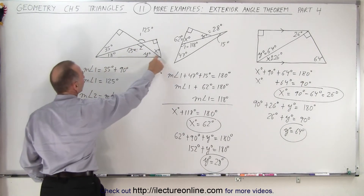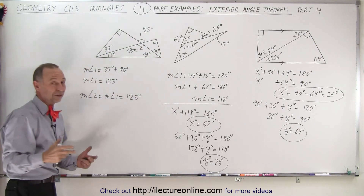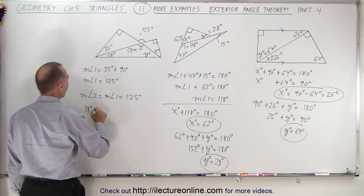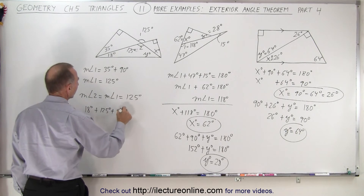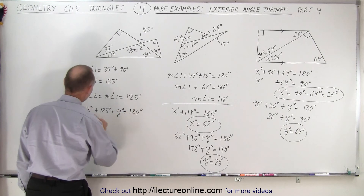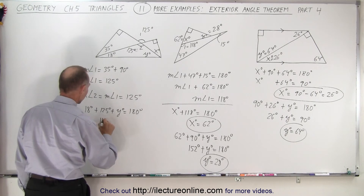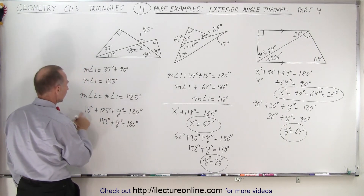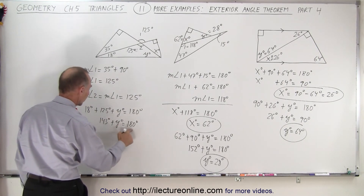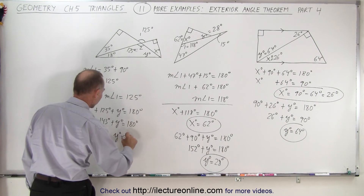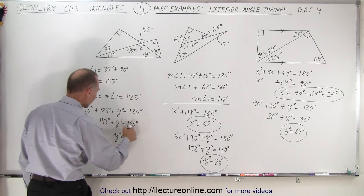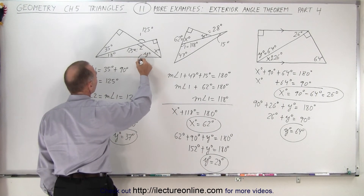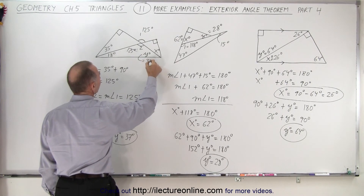I can use this triangle to find the value for y, because the sum of angles must add up to 180 degrees. So 18 degrees plus 125 degrees plus y degrees equals 180 degrees. Adding those gives 143 degrees plus y degrees equals 180 degrees. Subtracting 143 from both sides, y degrees equals 37 degrees, because 37 plus 143 gives 180. So y equals 37 degrees.